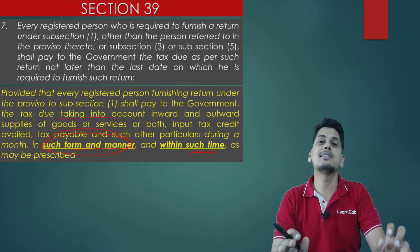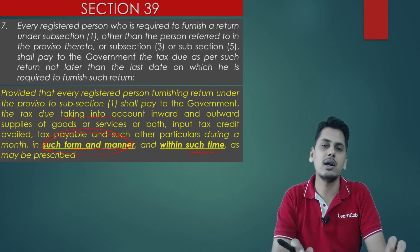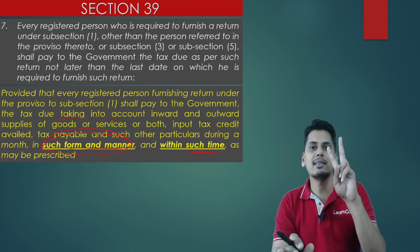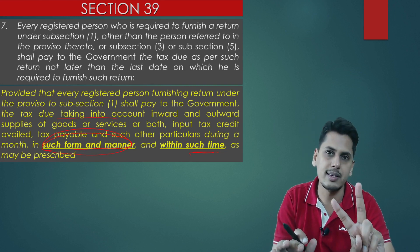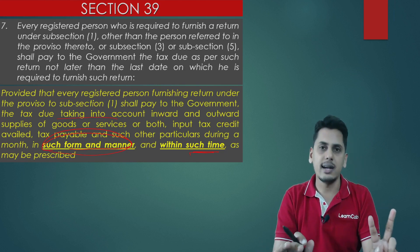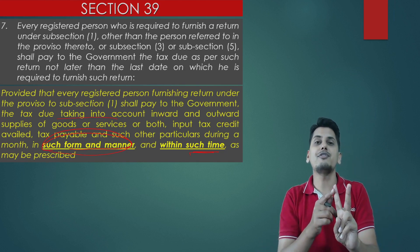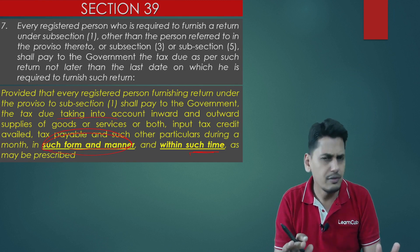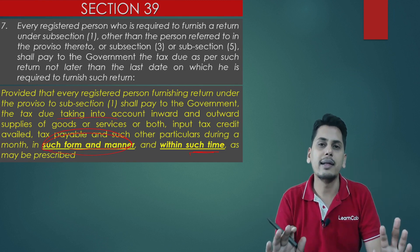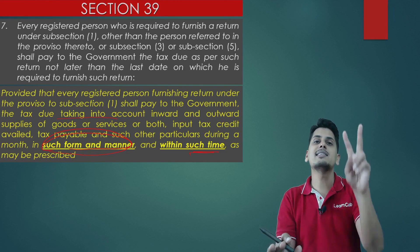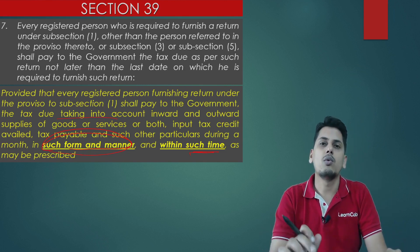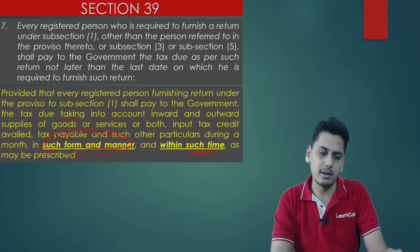That simple method is called the Fixed Sum Method. There are two methods under the QRMP scheme: one is the self-assessment method, which means you do the regular computation as you would in monthly filing; the second one is the Fixed Sum Method. Let us look at what we mean by the Fixed Sum Method.